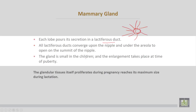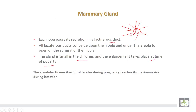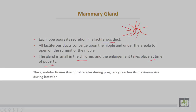The gland is small in children and enlargement takes place at the time of puberty. The glandular tissue itself proliferates during pregnancy, and the breast reaches maximum size during lactation.